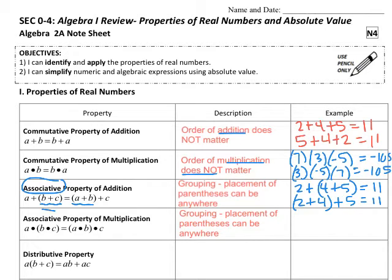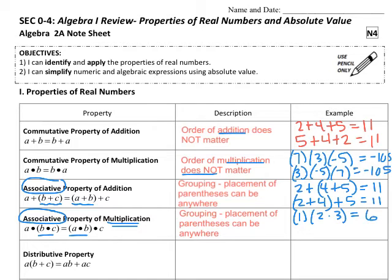For the associative property of multiplication, notice the multiplication dots. If you put your parentheses around b times c, or if you put your parentheses around a times b, your answer should come out the same. For example, with the numbers 1, 2, and 3: if we multiply 2 times 3 in parentheses, that is 6, times 1 is still 6. Or if we have 1 times 2 in parentheses and multiply by 3, we still come out to 6.